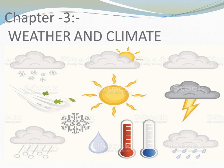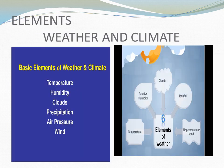Good morning children. This is the third video of the chapter Weather and Climate, covering the elements of weather and climate. In the last video we had already discussed two elements: temperature and air pressure. Today we are going to discuss two more elements — humidity and precipitation.